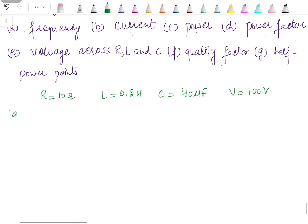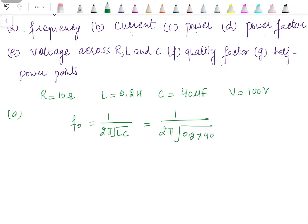The first part asks us to find the resonant frequency. The resonant frequency is given by f₀ = 1 / (2π√LC) for series circuits. So it is 1 / (2π × √(0.2 × 40×10⁻⁶)), and when we solve this we get the resonant frequency as 56.27 hertz.